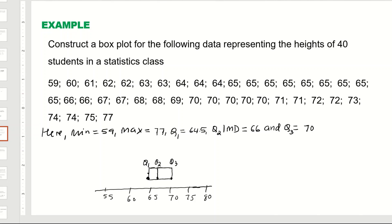We then draw the left whisker from Q1 extending back to the minimum value of 59, and the right whisker from Q3 extending out to the maximum value of 77. The diagram we have created is called the box plot, or sometimes the box-and-whisker plot.